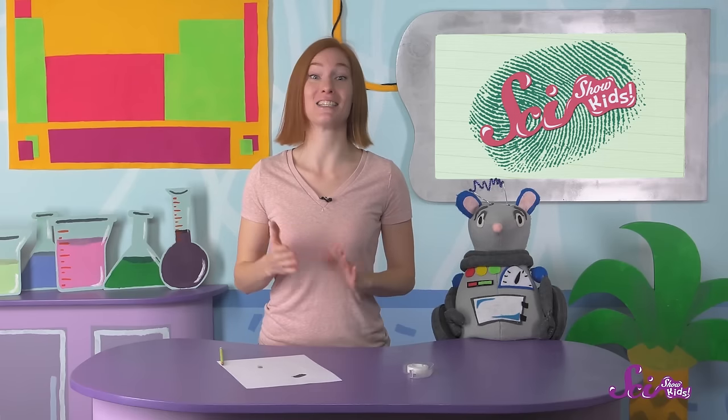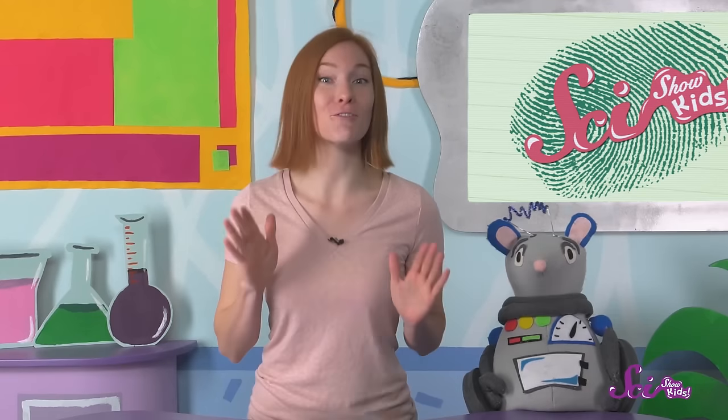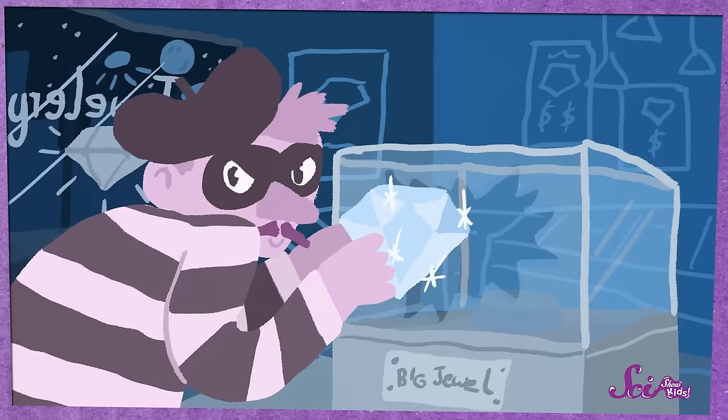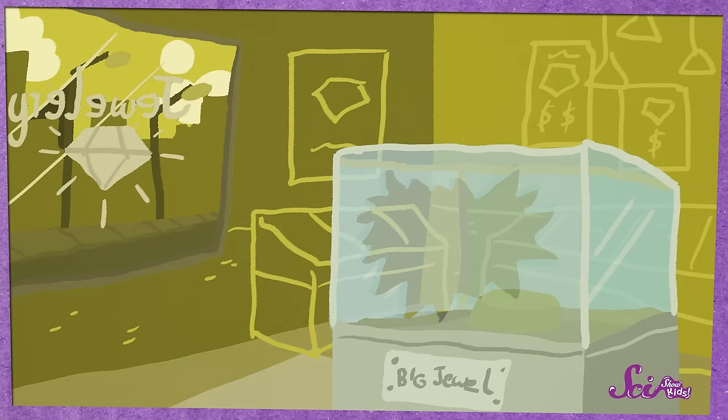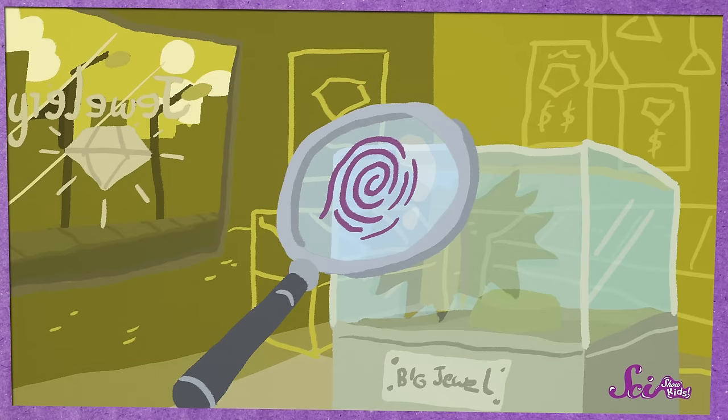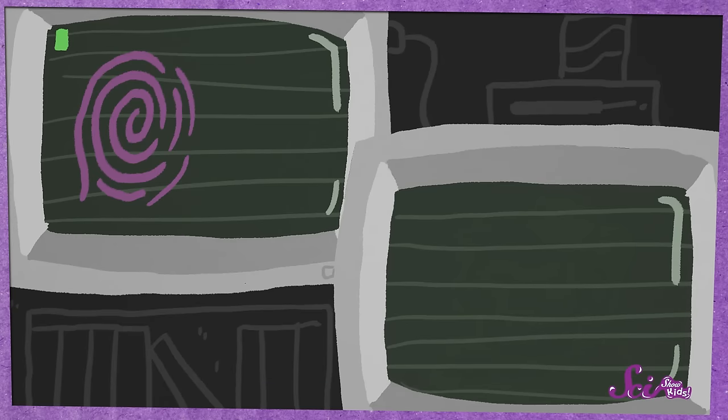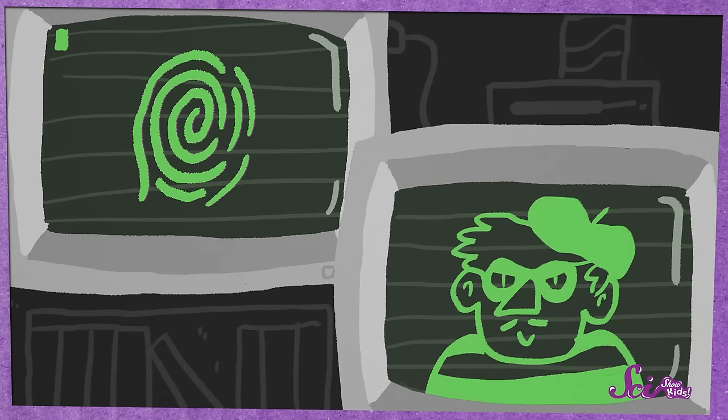The fact that everyone has different fingerprints can also be pretty useful. The police can use fingerprints to solve crimes. Like, if someone steals jewelry from a store. If they know the thief touched the cabinets where they keep the diamonds, the police can figure out who did it by checking who has a matching fingerprint.